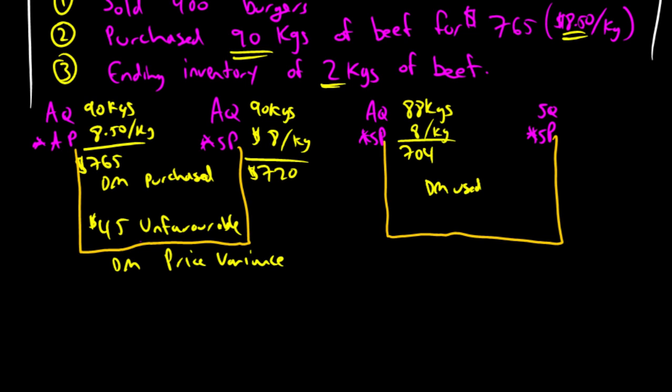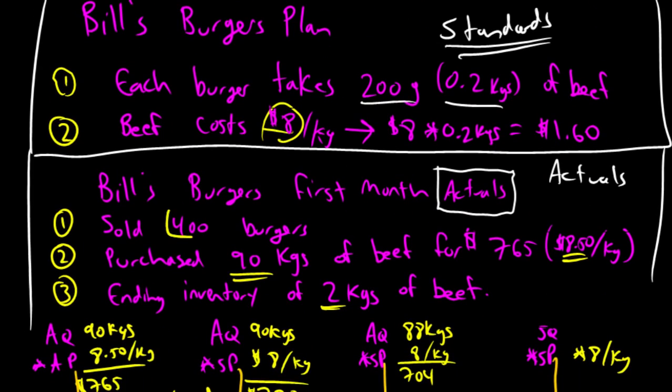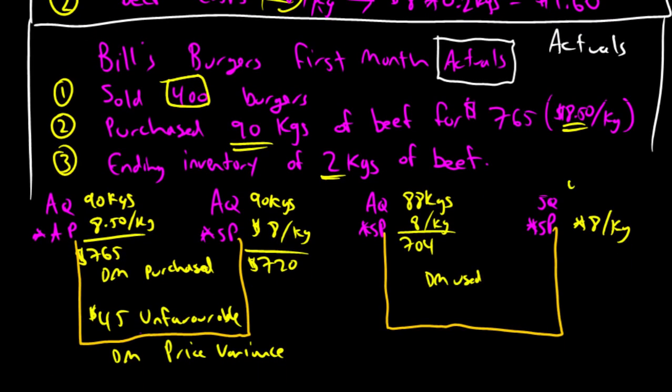Last, standard quantity times standard price. Well, the standard price remains $8. To figure out the standard quantity, we have to answer this question: given the actual number of units produced, how much material should have been used? How much direct material ought to have been used? So, given the fact that he made 400 burgers, how many kilograms of beef should he have used? He did actually make 400 burgers. It should take 0.2 kilograms. So, 400 times 0.2 means it should have taken 80 kilograms of beef. 80 kilograms times $8 a kilogram is $640.